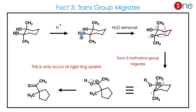Now we will see an unusual stereochemical fact, which applies in the rigid ring system. In a rigid ring system, the trans group always migrates, because the OH leaving group is in the equatorial position and forms the cation. Only the trans group migrates easily due to anchimeric assistance. The 6-membered ring becomes a 5-membered ring — ring contraction happens — and the final product has the ketone. This only occurs in the rigid ring system.